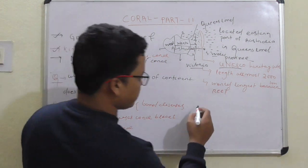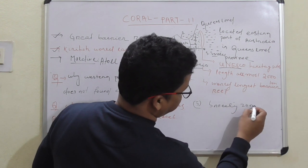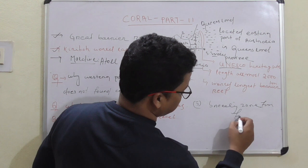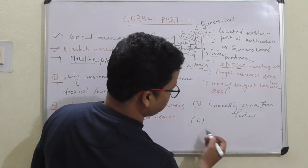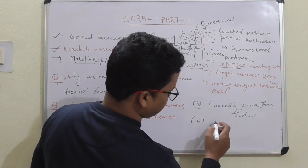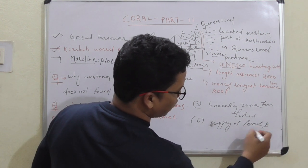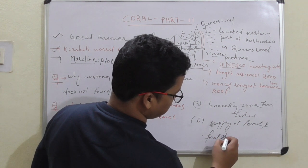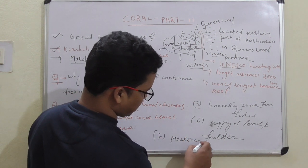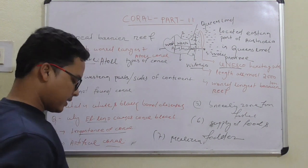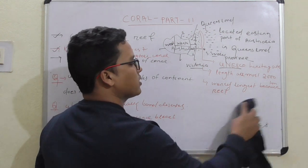Third importance: corals are a breeding zone for fish. Fourth: corals provide supply of food and fodder. These are some of the key importances of corals.